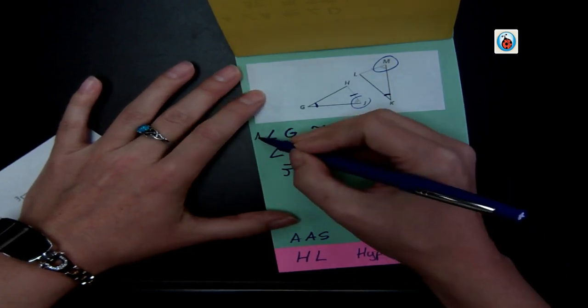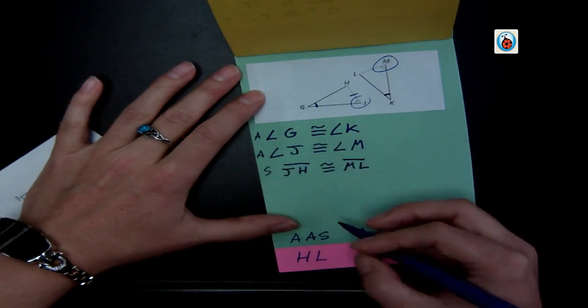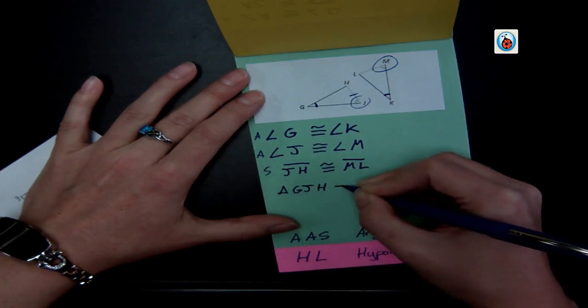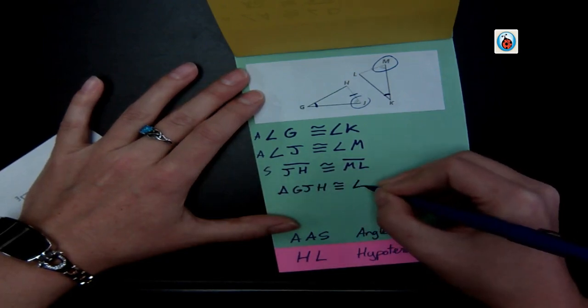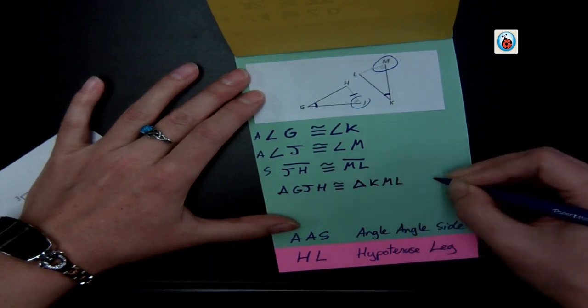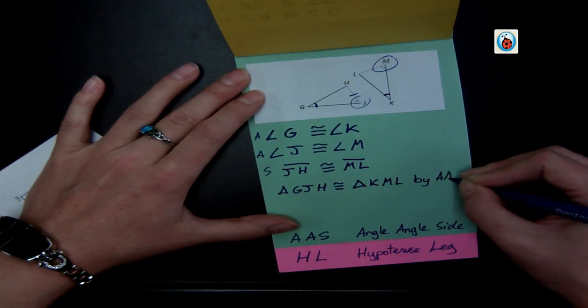So I have angle, angle, side. And so I have triangle GJH is congruent to triangle KML by angle, angle, side.